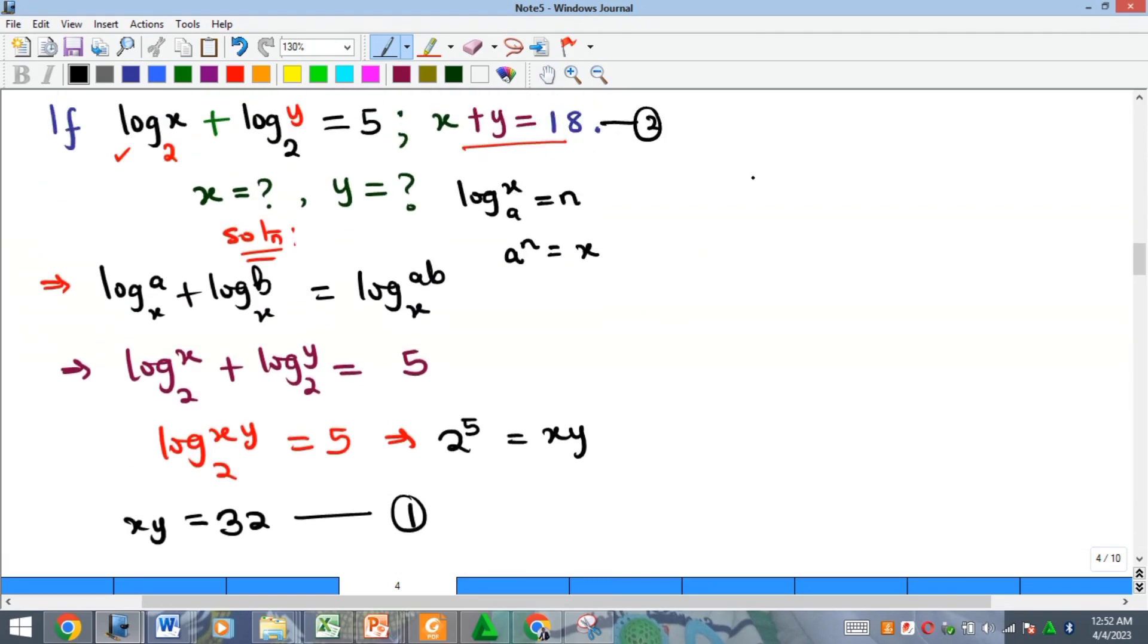I want to now solve the two of them simultaneously. Equation 1: xy equals 32, and equation 2: x plus y equals 18. From equation 2, I can write y in terms of x, and then substitute into equation 1. Let me do y in terms of x. That's going to give me y equals 18 minus x. This is like equation 3.